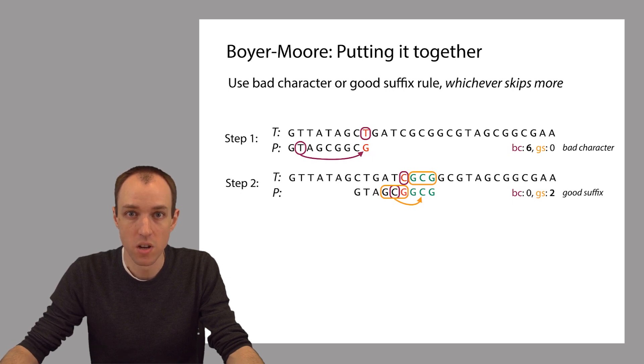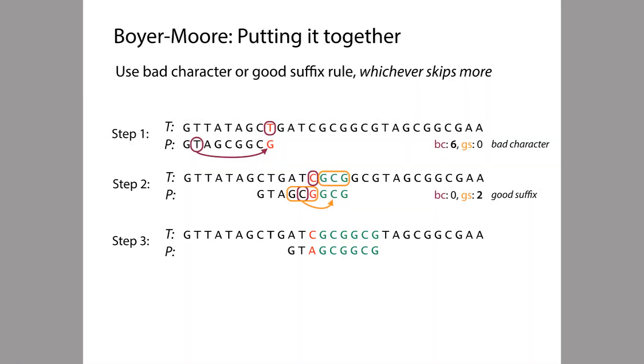We're going to shift P over by three characters. So we take the maximum, and we shift P over by three characters, skipping two alignments. And we get this.